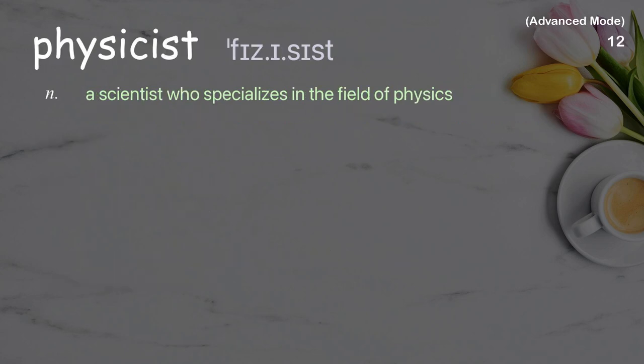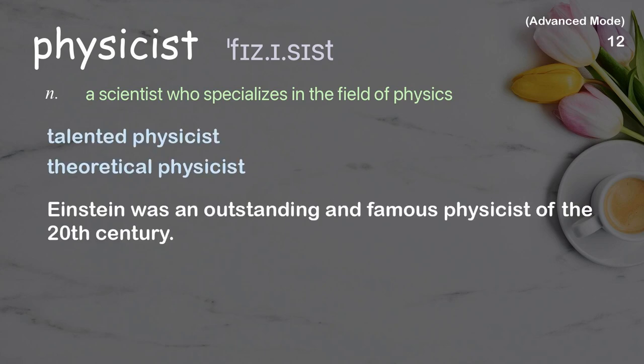Physicist: a scientist who specializes in the field of physics. Examples: talented physicist, theoretical physicist. Einstein was an outstanding and famous physicist of the 20th century.